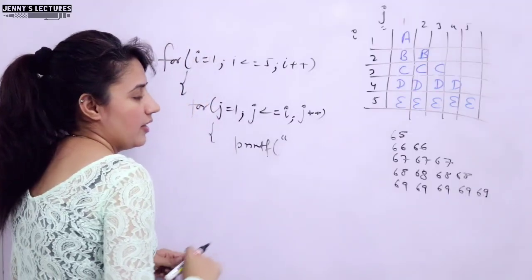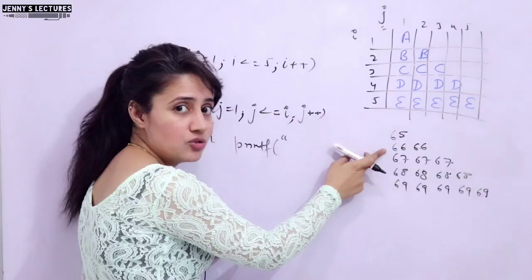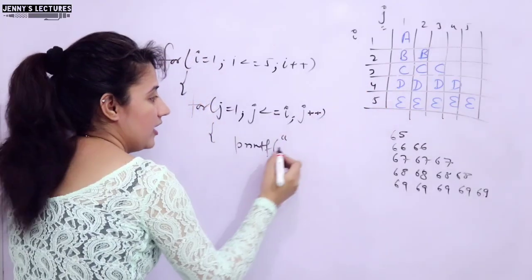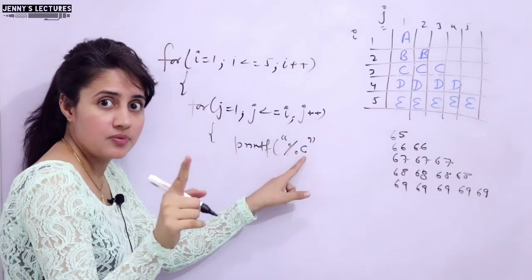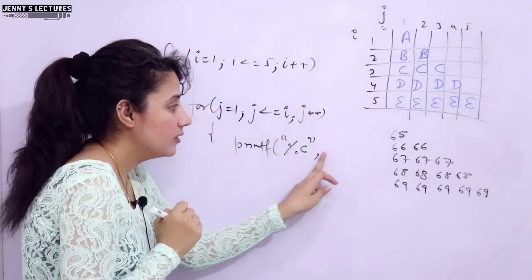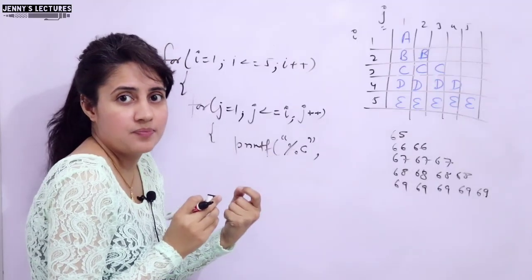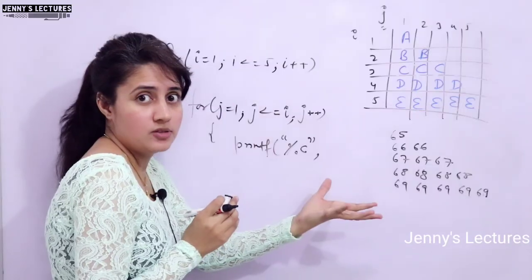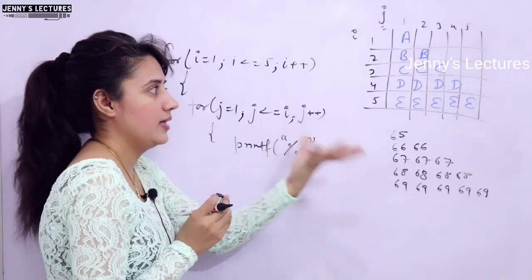We have to print something like this. In first line 65, then 66, 67, like this. But we are not printing actual integer values, we are printing character values. To print a character, what should be the format specifier in printf? Percentage C. You will not write percentage D, you will write percentage C because we are not printing integer, we are printing character.